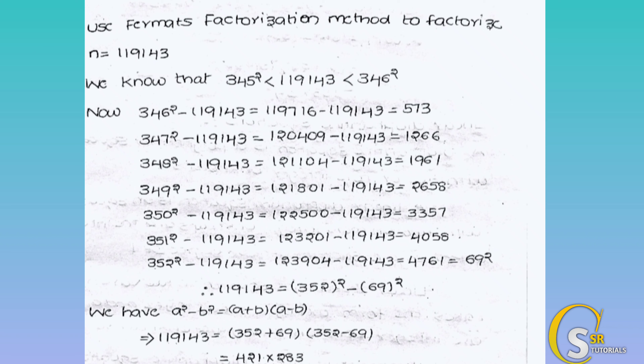Now we use these values to find the factors. We have 352 squared minus 119143 equals 69 squared, which rearranges to n equals 352 squared minus 69 squared. This fits the algebraic identity a squared minus b squared equals (a plus b)(a minus b).